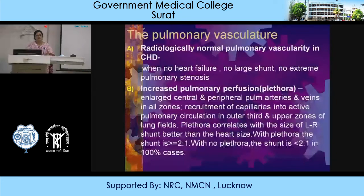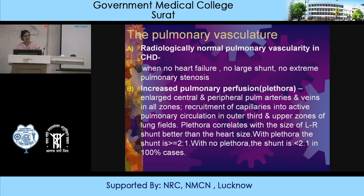Radiologically normal pulmonary vascularity in CHD occurs when there is no heart failure, no cyanotic shunt, and no extreme pulmonary stenosis. Increased pulmonary perfusion or plethora shows enlarged pulmonary arteries and veins in all zones and recruitment of capillaries into active pulmonary circulation in the outer thirds and upper zones, which is not normally seen. Pulmonary plethora correlates with the size of left-to-right shunt better than heart size: if there is plethora, the shunt is more than 2:1; no plethora means shunt is less than 2:1 in 100% of cases.